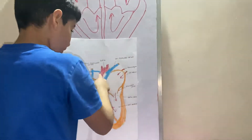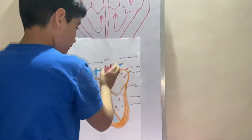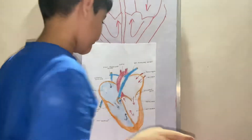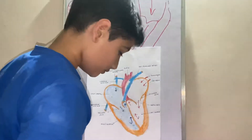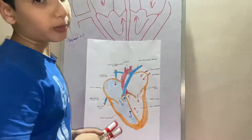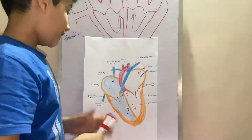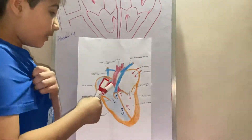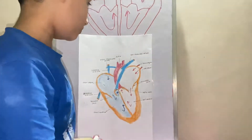From the left ventricle, it contracts again and ejects through the semilunar valve, also called the aortic valve. The oxygenated blood then goes into the aorta, which distributes the blood to the whole body. This is the process of the heart.